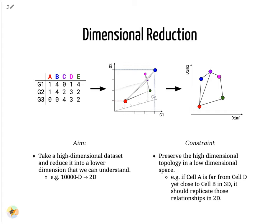Here the relative differences between cells is maintained in both the high and low dimensional representations. There are many different kinds of dimension reduction techniques, each with their own strengths and weaknesses dependent on the type and the dimensionality of the data.